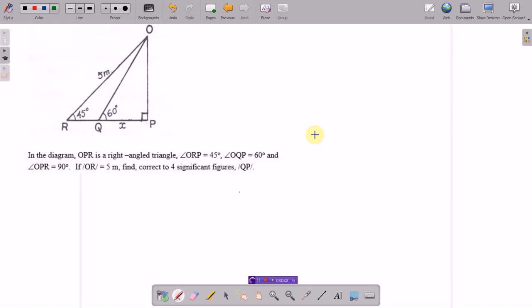In the diagram, OPR is a right-angled triangle. Angle ORP is 45 degrees, angle OQP is 60 degrees, and angle OPR is 90 degrees. If the distance OR is 5 meters, find correct to 4 significant figures, QP.